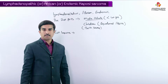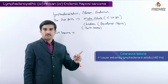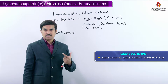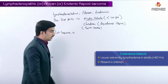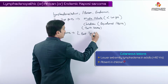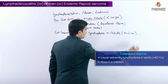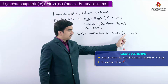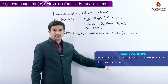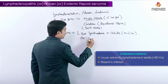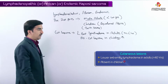Under the African or endemic type of Kaposi sarcoma, lower extremity lymphedema in adults is considered to be the most common site. Adult males under the age of 40 most often present with cutaneous lesions as lower extremity lymphedema. However, no cutaneous involvement is seen in children — this is a very important MCQ point.